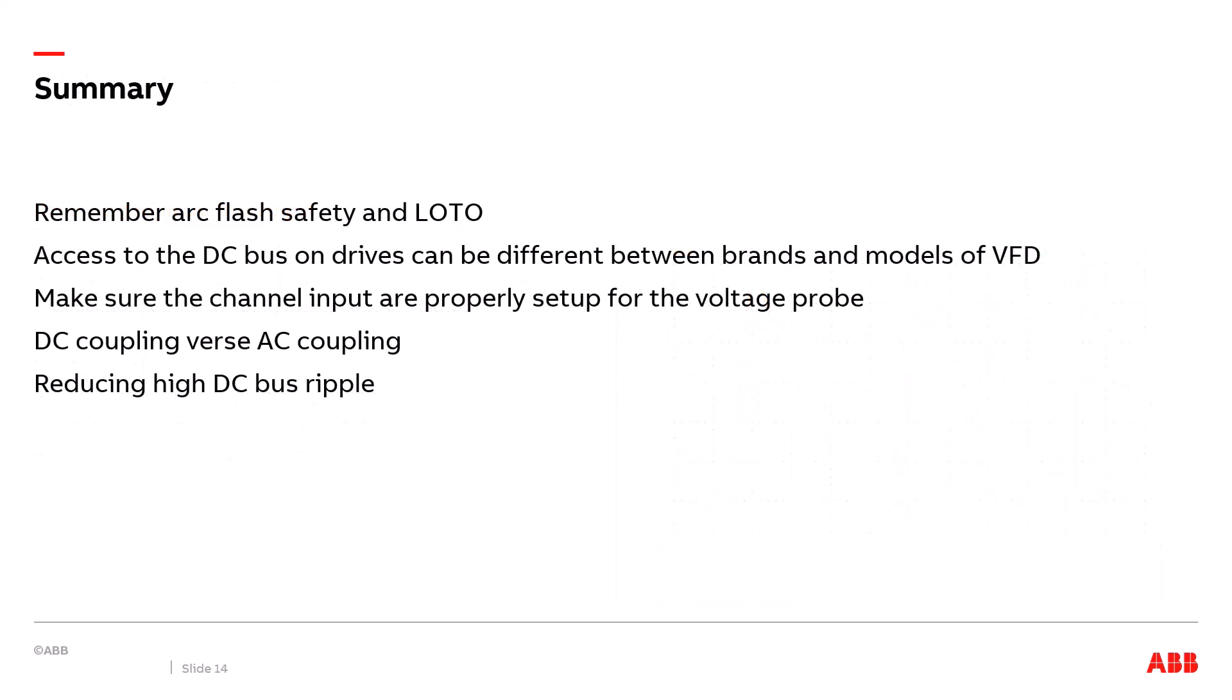All right let's summarize what we've learned in this presentation. First off from an electrical safety standpoint remember to wait five minutes once power has been removed before making any connections to the VFD. Depending on the model and brand of VFD the access to the DC bus can be different so make sure to review a manual for proper terminal locations if necessary. When we set up a scope for the voltage probe we want to make sure that we set it up correctly so that the signal will be scaled correctly on the scope. We learned the differences between DC coupling and AC coupling. AC coupling you can see the voltage ripple much easier compared to DC coupling and if you do have a high peak to peak voltage ripple on a DC bus depending on the cause there can be different solutions. Some of them can be just adjusting some parameter settings in the drive while other ones may require additional hardware such as a line reactor to resolve a DC bus ripple issue.